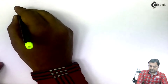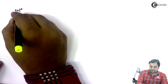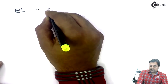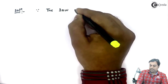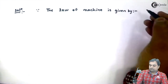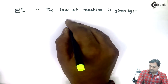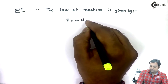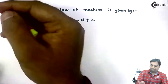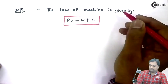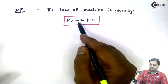Solution: since the law of machine is given by the formula P is equal to M into W plus C, I will use this law of machine and put in the values of effort and load given.